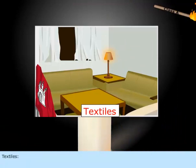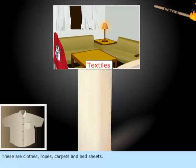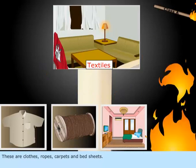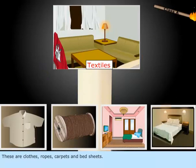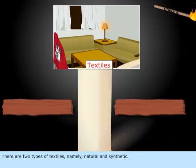Textiles. These are clothes, ropes, carpets, and bedsheets. There are two types of textiles, namely natural and synthetic.